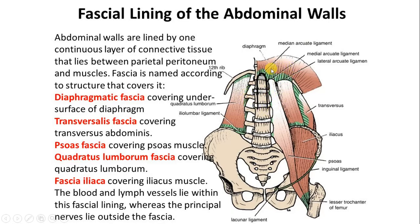Fascia lines all over the body. Where it lines the diaphragm, it is called diaphragmatic fascia. On the anterior abdominal wall, when it covers the transversus abdominis muscle, it is called fascia transversalis. When this fascia comes over the quadratus lumborum muscle, it is named quadratus lumborum fascia. And when it covers the psoas, it is the psoas fascia.